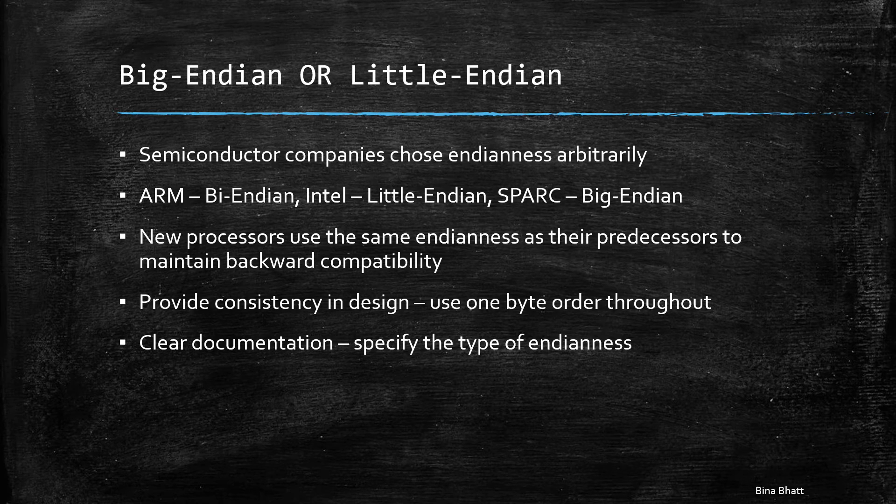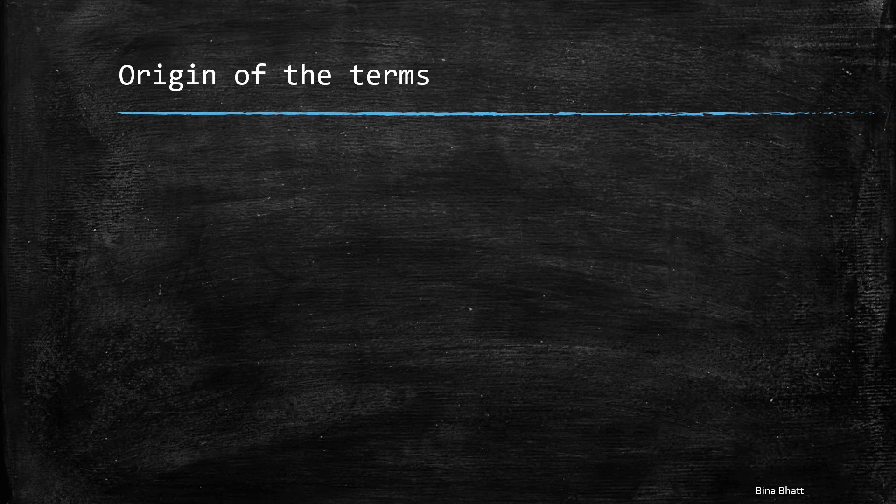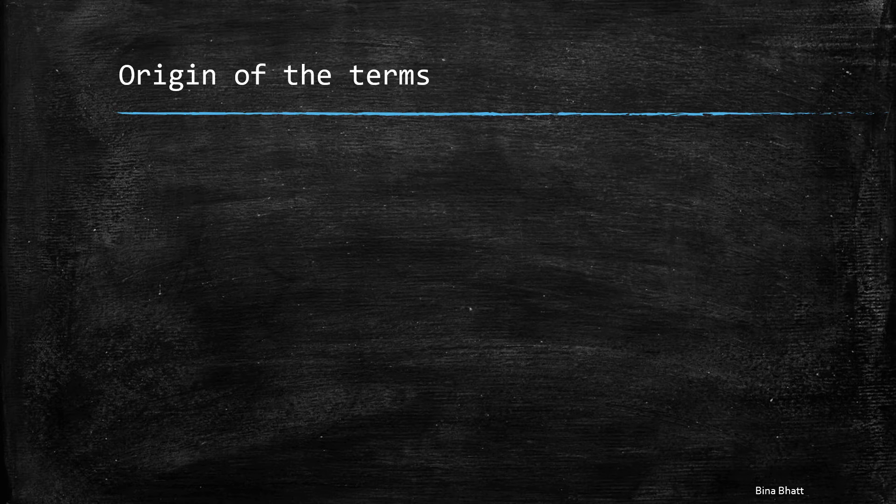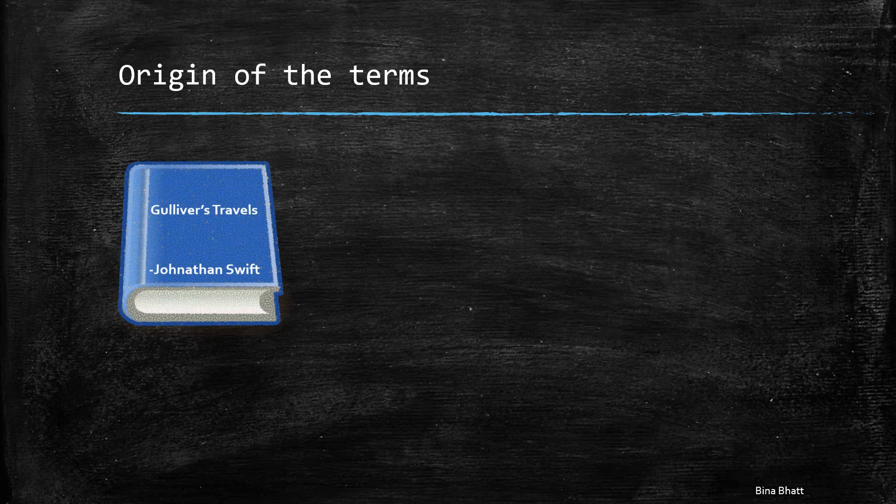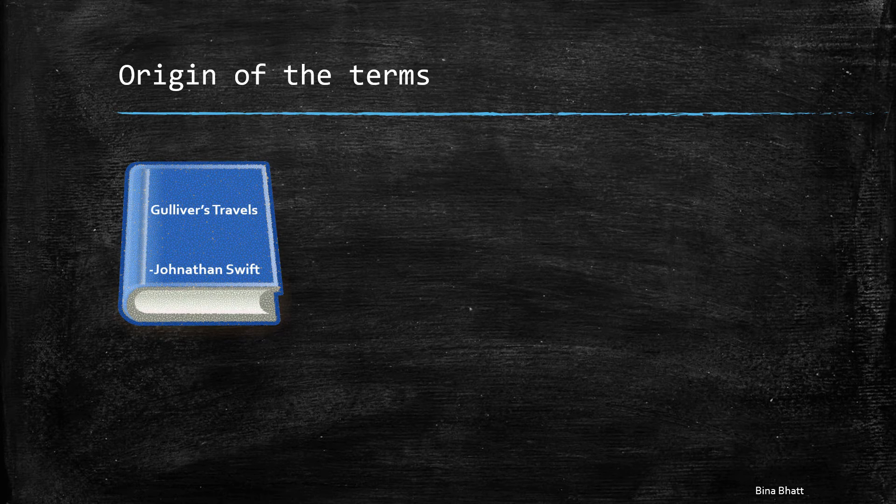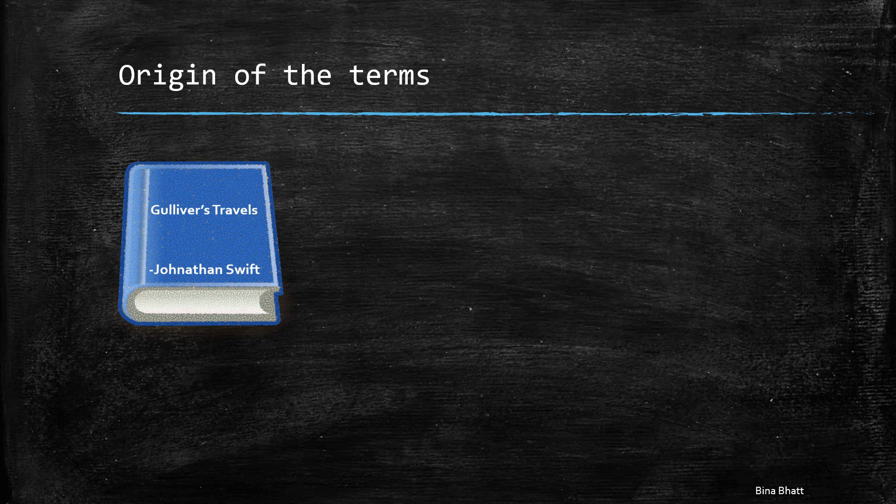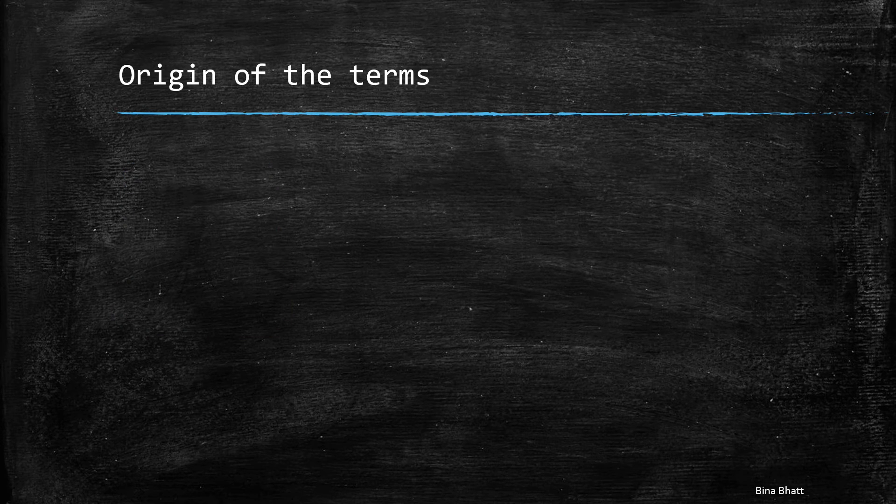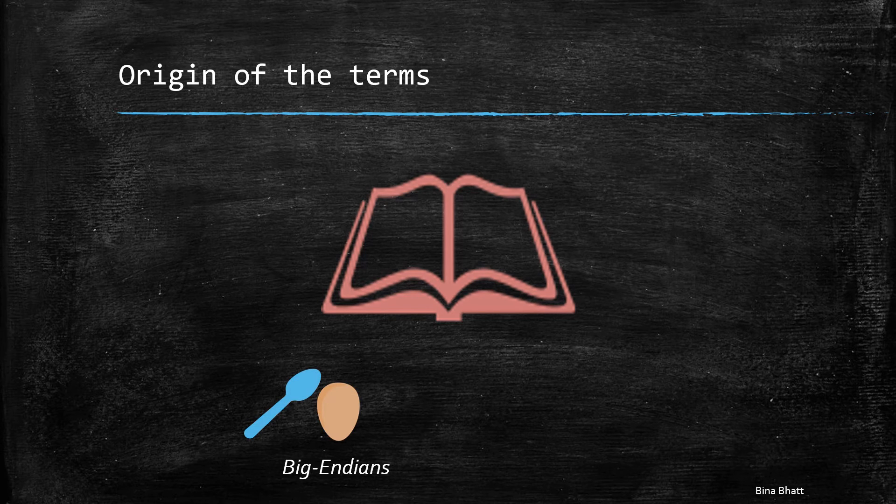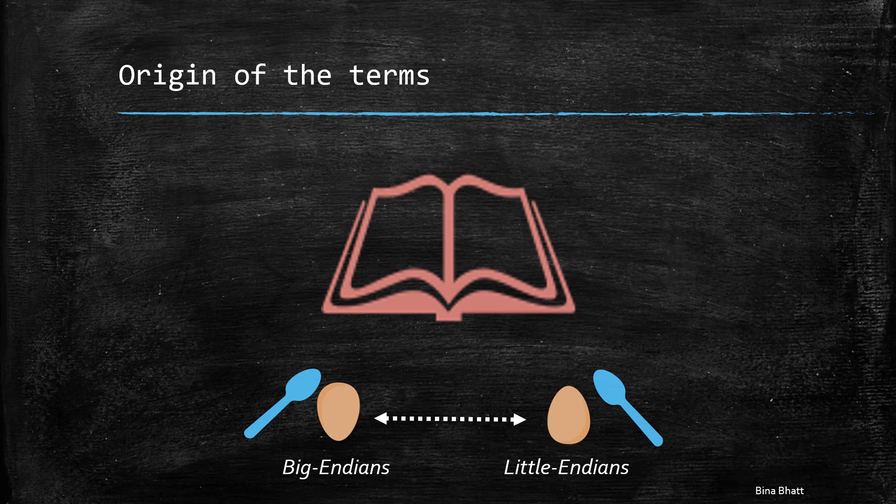Now, before I wind up this video, let's look at the origin of both these words, little endian and big endian. They were first used by Jonathan Swift in his novel titled Gulliver's Travels. Here, a political group that broke their boiled eggs at the big end were known as big endians, and they rebelled against a Lilliputian king who made his subjects break their eggs at the little end. And thus, they were known as little endians. Completely meaningless squabble.